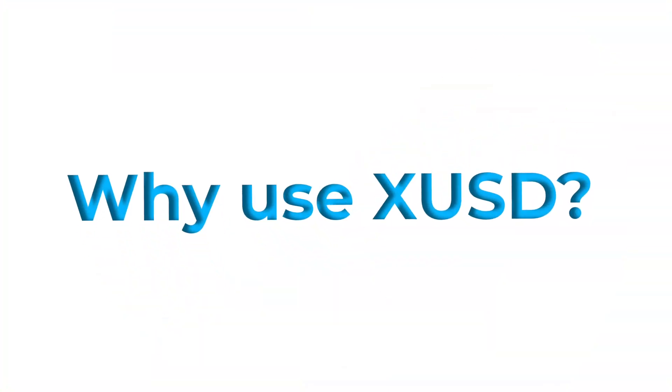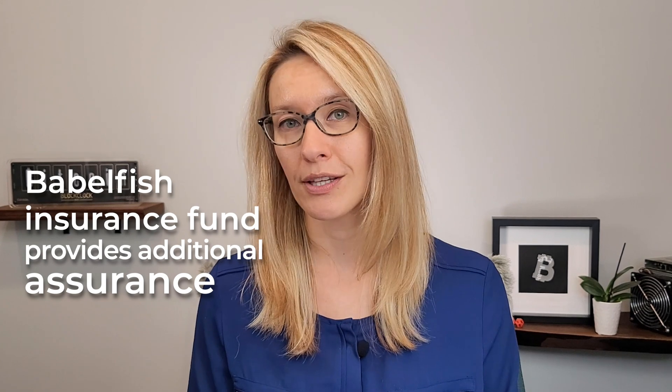XUSD is a unique stablecoin. By acting as a decentralized aggregator and distributor of different stablecoins, it offers three different advantages. First, it reduces risk. By pooling liquidity across multiple networks, it reduces potential systemic risk across platforms and marketplaces if one stablecoin is compromised. Users of XUSD are also subject to less systemic risk because the Babelfish insurance fund is intended to provide a level of security that goes beyond the assurances operated by its underlying stablecoins.